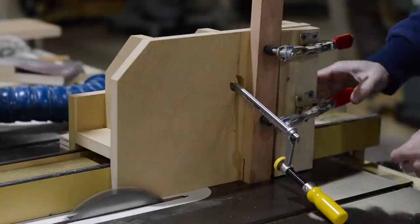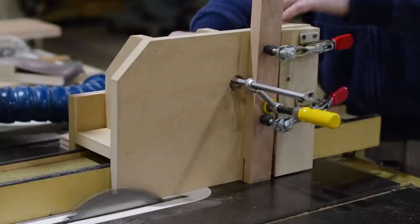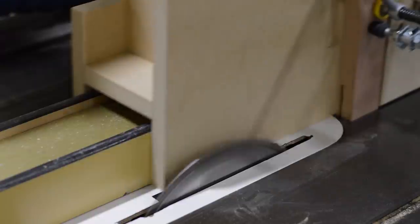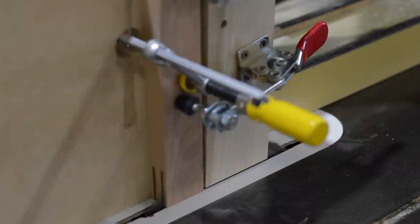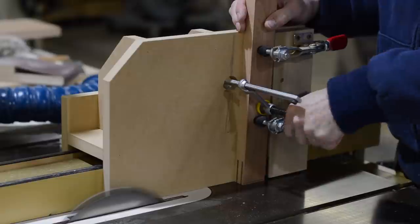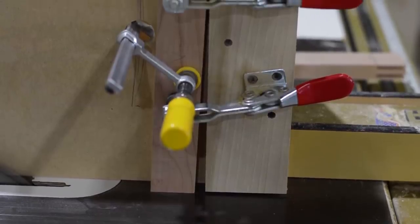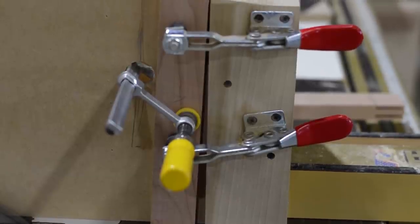I cut the tenons first. The exact size isn't real critical. I'm shooting for a fat quarter of an inch. And here's where those two degree end cuts pay off. I use the end cut to reference the surface of my table saw. This ensures that the shoulder of the tenon is cut at two degrees, so there's virtually no setup.